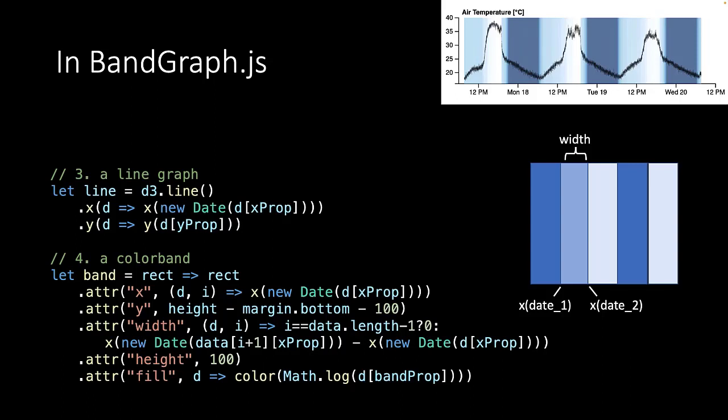The color band is a bit more tricky. We build up a color band by stacking together thin rectangles. The width of the rectangles are given by the X values, and the color of the rectangle is given by the ambient light data. We use the color interpolator to go from the ambient light data to a certain color value.